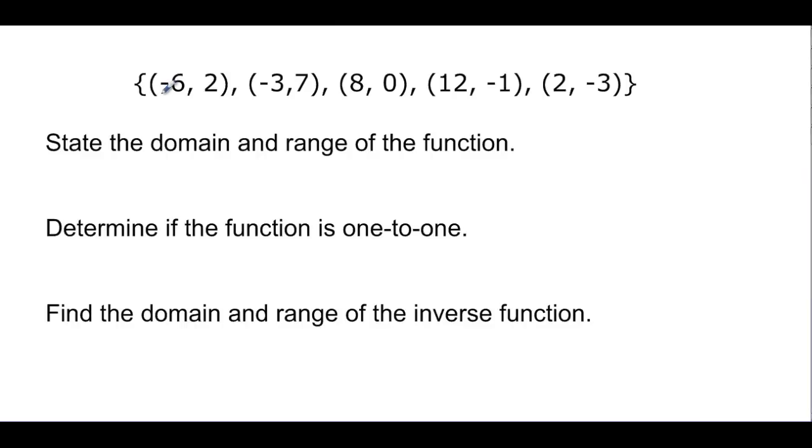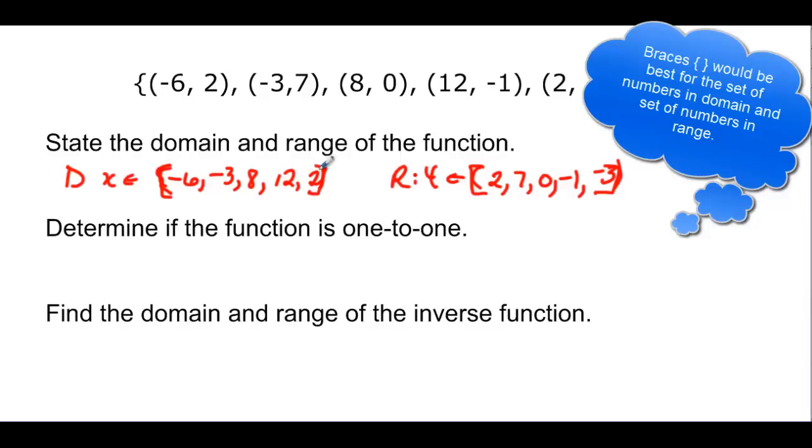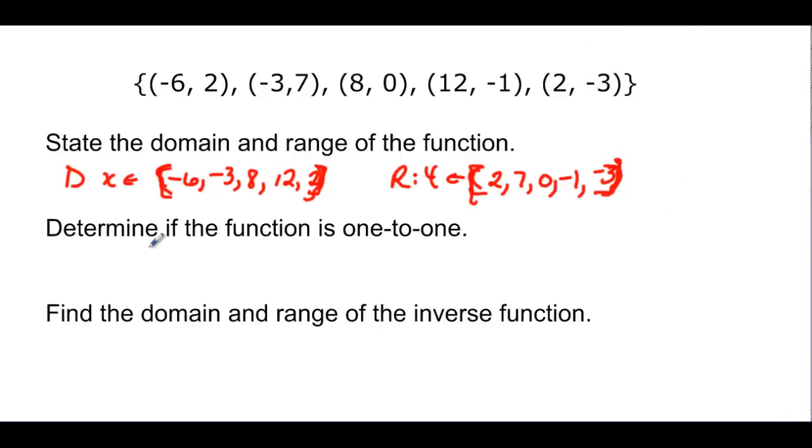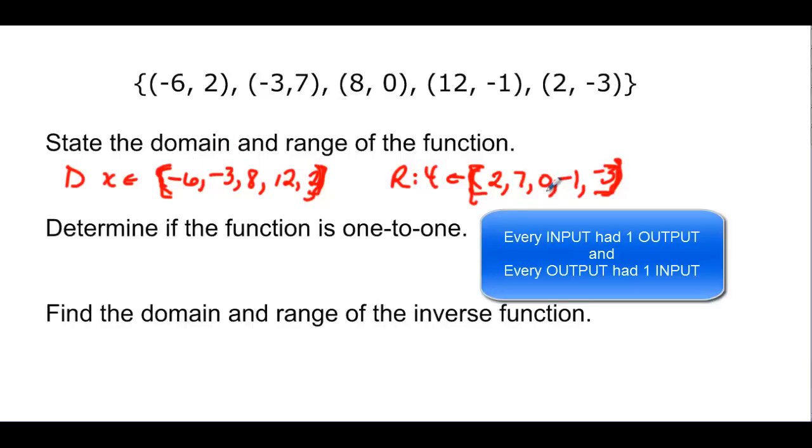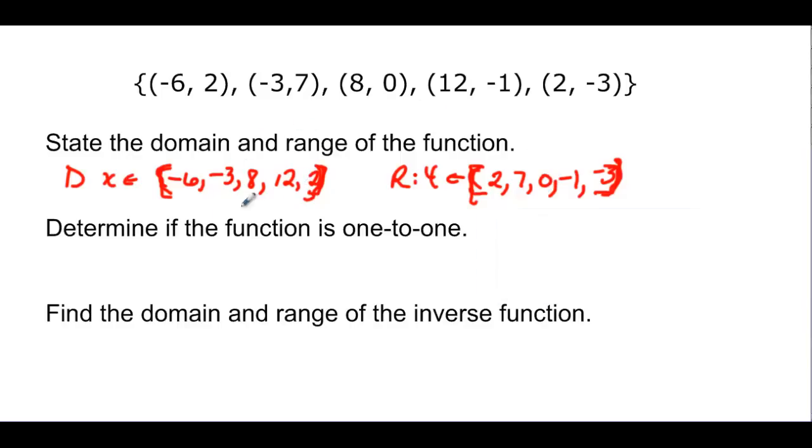Alright, now if we look at this function, it happens to be in ordered pairs. But what's the domain? Well, the domain in our case here is going to be x is an element of {-6, -3, 8, 12, 2}. And the range is going to be y is an element of {2, 7, 0, -1, -3}. Probably would even be better if we had braces on here. It's just a set of numbers. And we want to know then if it's one-to-one. Well, if we look at our range values, we had five different range values and we've had five different inputs. So that means that every input had its own output, made it a function. And every output had its own input, so that made it a one-to-one function. Remember, it must be a function first to be a one-to-one function.